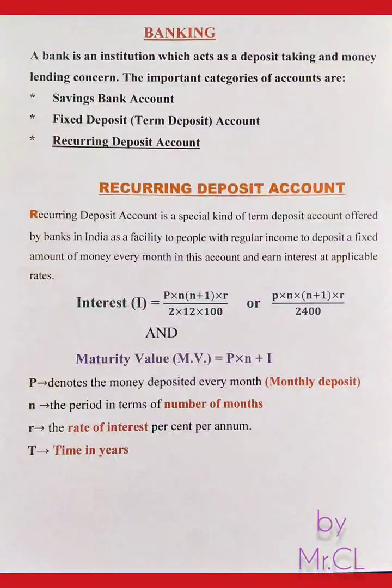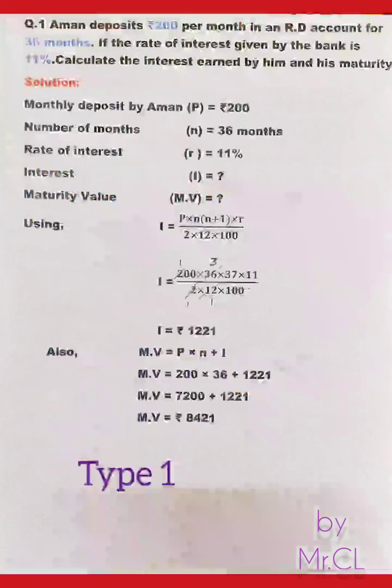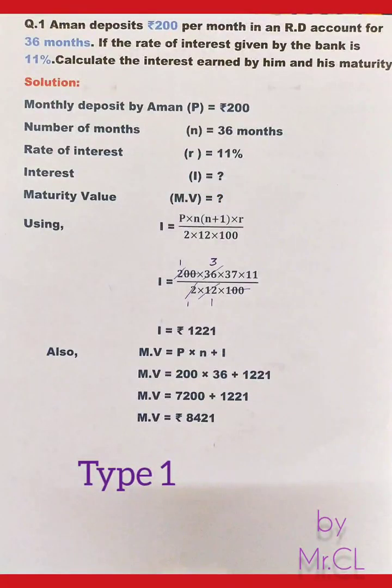Where P denotes the money deposited every month (the monthly deposit), n denotes the number of months, R denotes the rate of interest, and T denotes time in years. Now let's see the first type of question.